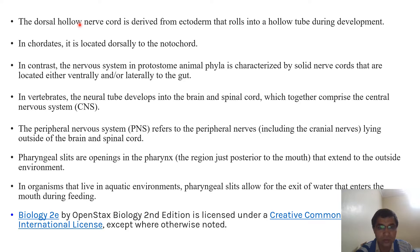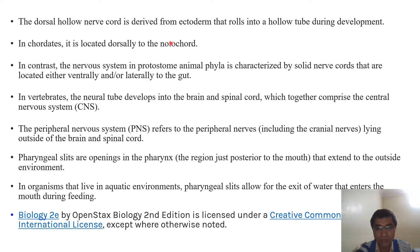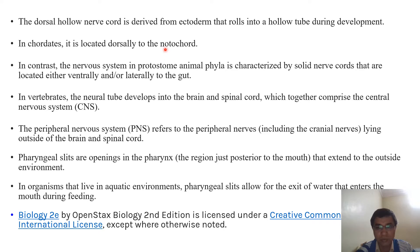This dorsal tubular nerve cord is modified in the form of the spinal cord in vertebrates, but it persists in urochordates. On the other hand, the notochord is modified in the form of vertebral columns in vertebrates, but in chordates it persists as the notochord.